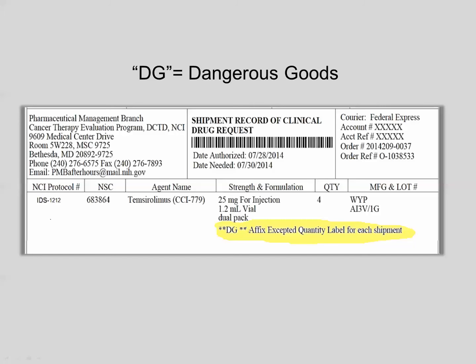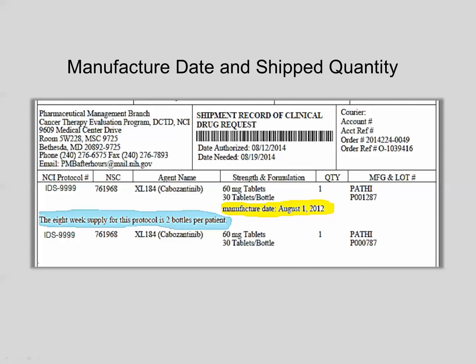The middle section of the shipping record may contain special notes such as DG. A DG means dangerous goods. Certain agents will be labeled as DG because they require special handling and packaging for transport. Expired or recalled DG agents need approval from the PMB for local destruction when the agent cannot be returned to the NCI clinical repository for proper disposal. Other special notes could include a manufacturer date when the agent label does not have it, or a change in order quantity from what was originally requested, usually an eight-week supply.